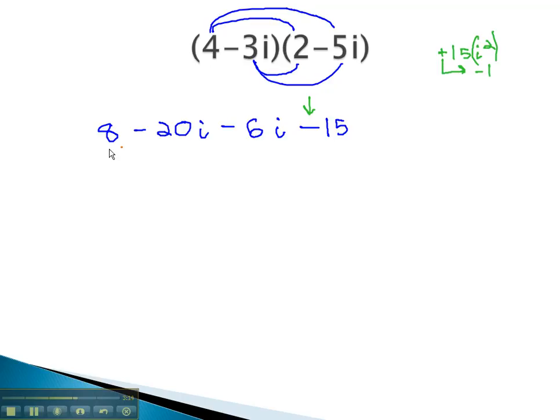Now, we can combine like terms. 8 minus 15 is negative 7. Negative 20i minus 6i is negative 26i, and we have our solution.